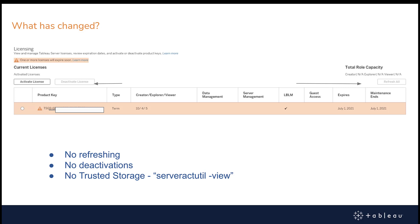Let's go to the TSM user interface. This is where all the activity happens for activating, deactivating, and refreshing keys. We want to talk about what's changed when server ATR has been selected. Some of the changes you will notice if you've selected server ATR is that the ability to deactivate a license and refresh are grayed out. It's not needed to do those activities anymore when server ATR is selected.